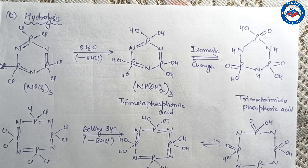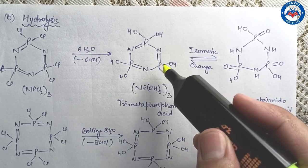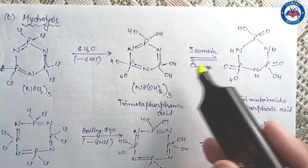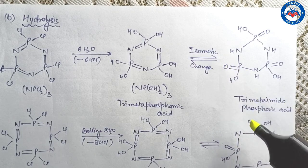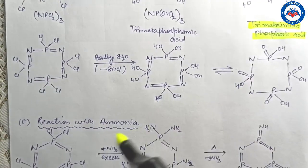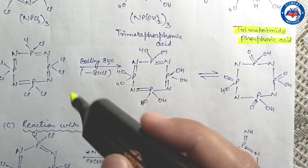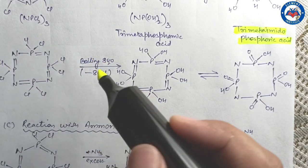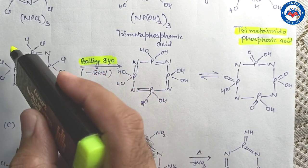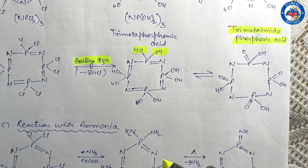Next are hydrolysis reactions. The cyclic trimer can be easily hydrolyzed to trimetaphosphoric acid by reaction with water, which undergoes isomeric change to trimetaphosphoric acid. The cyclic tetramer requires more forcing conditions — hydrolysis takes place with boiling water — and in this case all halogen atoms are hydrolyzed and substituted by OH groups. The product is fairly stable.